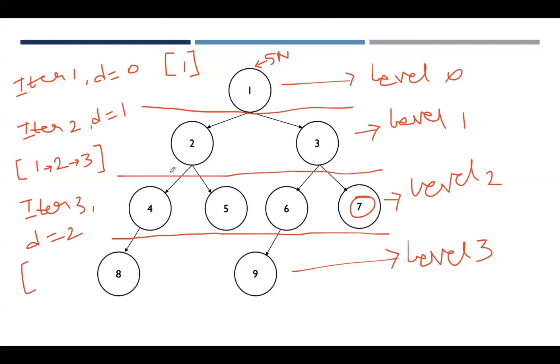Now the traversal takes place till level 2. If we are applying the same depth first search process, you can write the output. That is: 1, 2, traverse through the left side first.